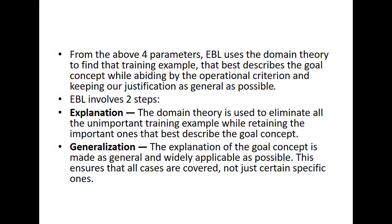From the four input parameters, EBL uses the domain theory to find the training example that best describes the goal concept while abiding by the operational criteria and keeping the justification as general as possible. EBL involves two steps: explanation, where the domain theory is used to eliminate all unimportant aspects of the training example while retaining the important ones that best describe the goal concept; and generalization, where the explanation of the goal concept is made as general and widely applicable as possible, ensuring that all cases are covered, not just certain specific ones.